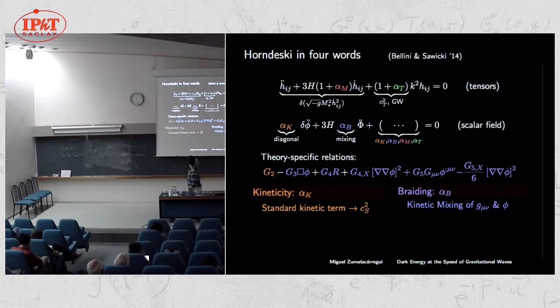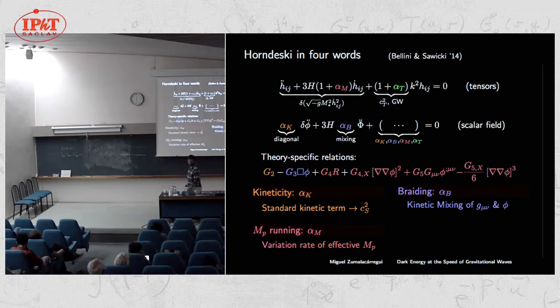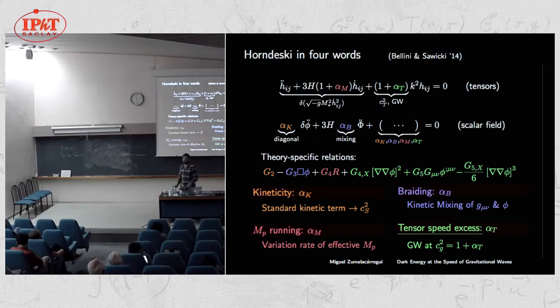Looking at the tensor equations, we can define the running of the effective Planck mass — the time variation of the strength of gravity on cosmological scales — and the anomalous speed of gravitational waves, or tensor speed excess, which determines tensor perturbations and gravitational waves on the FRW background.